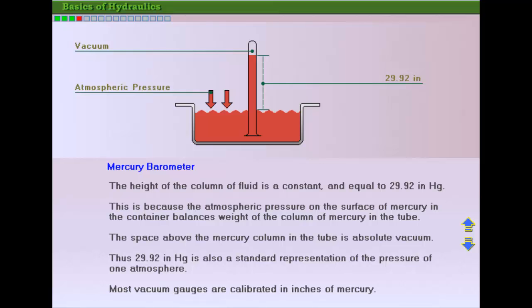This is because the atmospheric pressure on the surface of the mercury in the container balances the weight of the column of mercury in the tube and the vacuum on top of the mercury in the tube. The space in the tube above the column of mercury is an absolute vacuum.